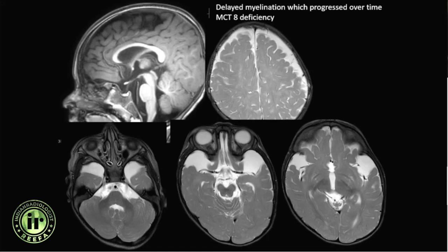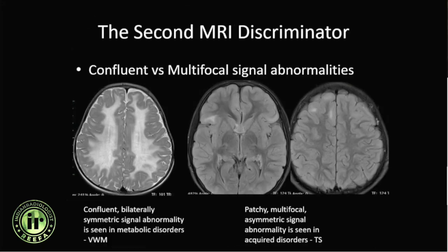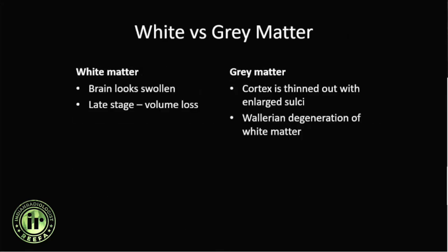This delayed myelination which progressed over time was seen in a patient with MCT8 deficiency. The second MRI discriminator is whether the MRI findings are confluent and bilaterally symmetrical versus multifocal and bilaterally asymmetric. Confluent, bilaterally symmetrical signal abnormalities are seen in metabolic disorders, whereas patchy, multifocal, asymmetric signal abnormalities suggest other acquired disorders like tuberous sclerosis or ADEM.